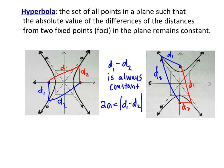We also can define it based on distance, and this is how Mr. Loach drew it. It's the set of all points in a plane such that the absolute value of the differences of the distance from two fixed points of the plane remains constant.